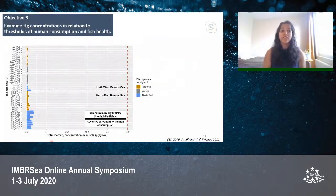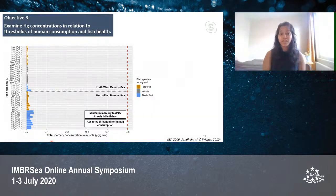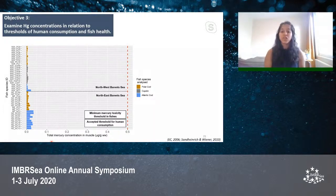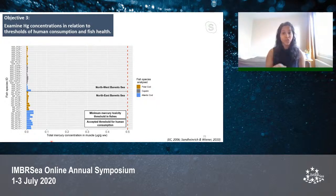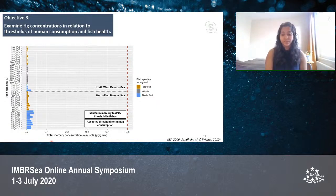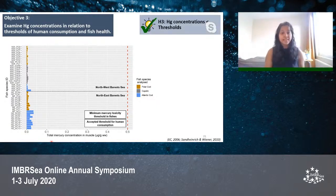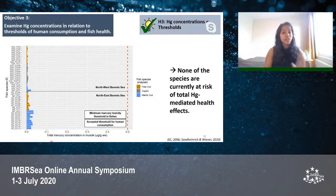Coming to our third objective, we examined mercury concentrations in relation to thresholds for human consumption and fish health. From the literature, 0.5 micrograms per gram wet weight is the minimum mercury toxicity threshold in fishes and simultaneously the accepted threshold for human consumption in the EU. All our individuals were well below this level, in accordance with our hypothesis, leading us to conclude that none of the species in our study are currently at risk of total mercury-mediated health effects.